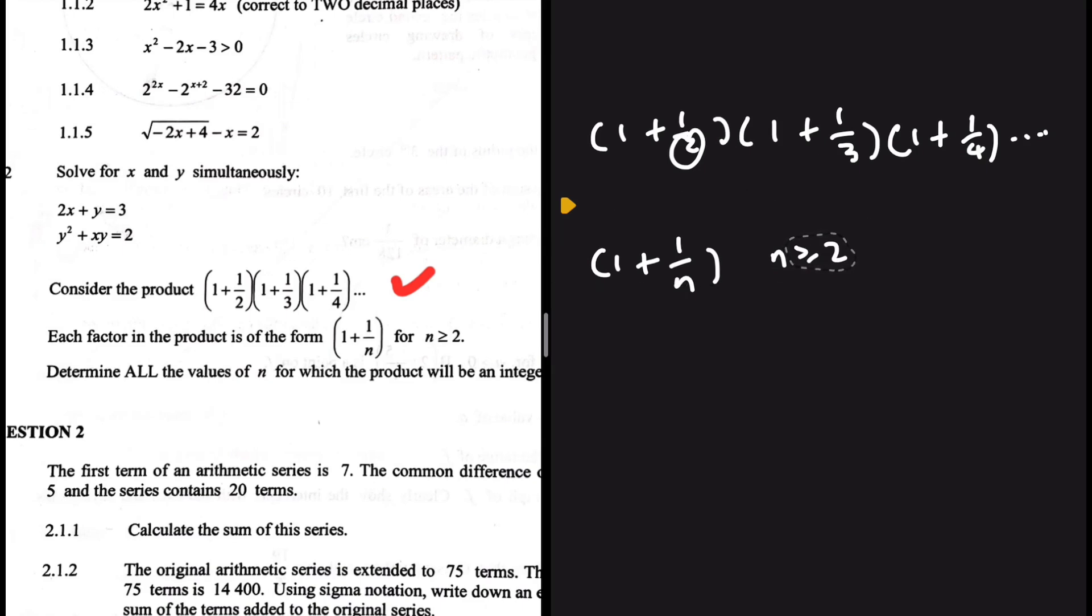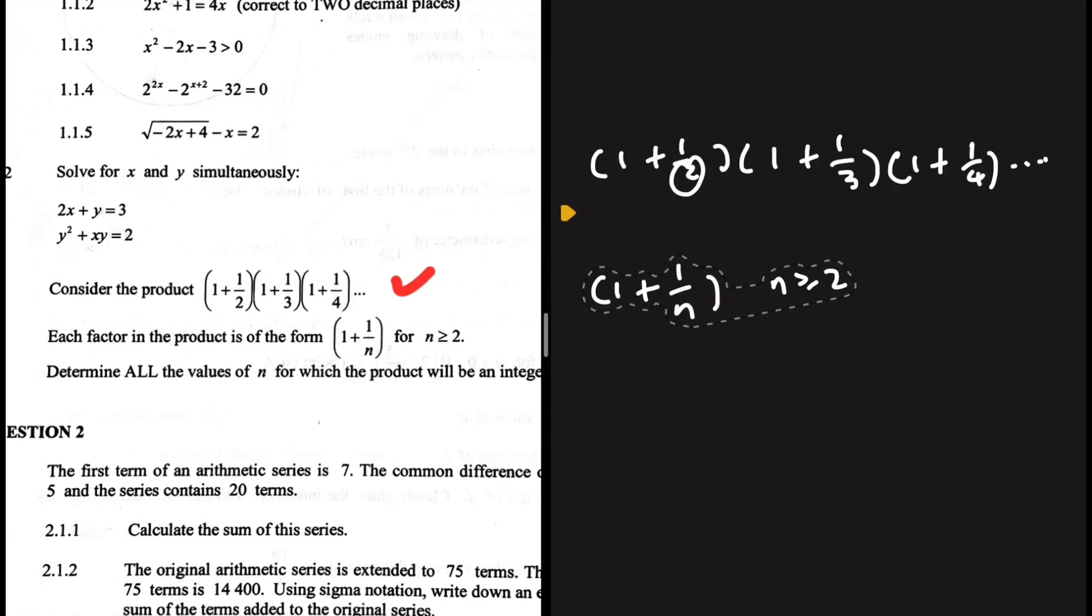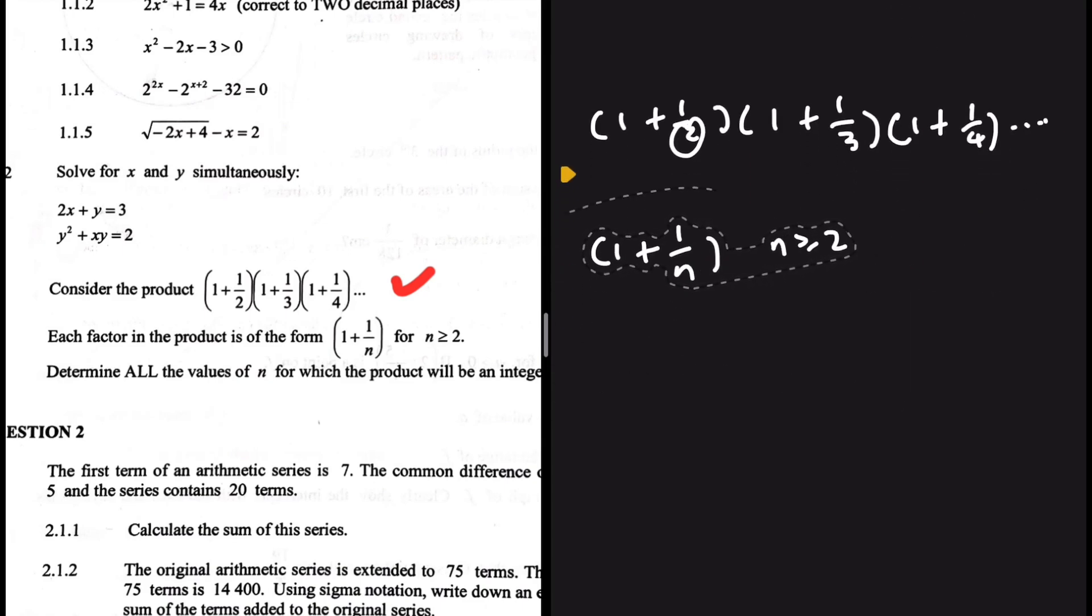So let me just drag these down and show you a couple of things. So instead of having 1 plus 1 over 2, let's just put that in our calculator. I get 3 over 2. So here the first term that I have is 3 over 2.